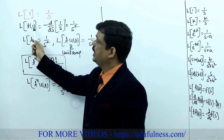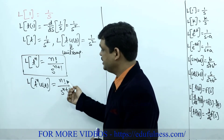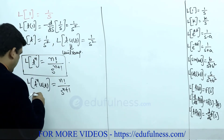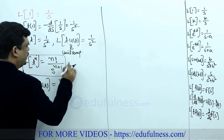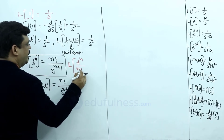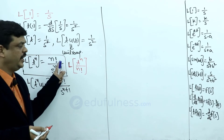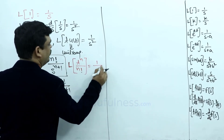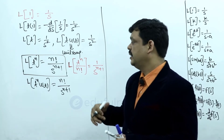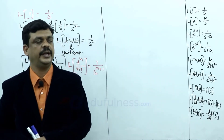Laplace transform of 1 is 1/s; if 1 multiplies with t, the denominator power increases and some constant appears in the numerator depending on the factorial. From this, one more standard equation: Laplace transform of t^n / n! equals 1/s^(n+1). This is another standard formula — because sometimes the expected equation involves n! in the numerator, so immediately write 1/s^(n+1).